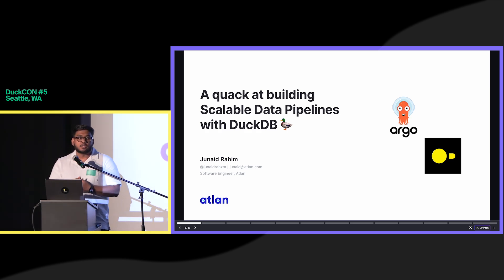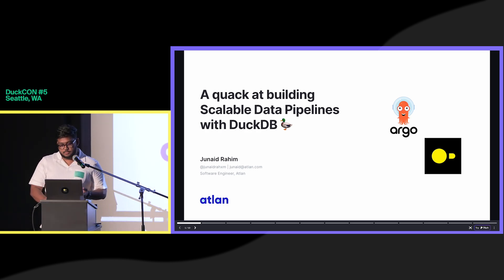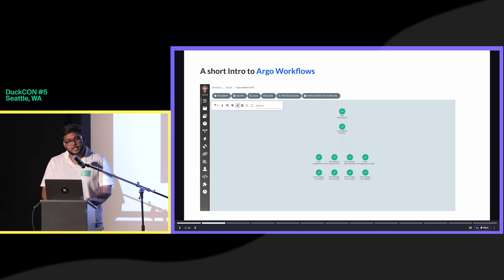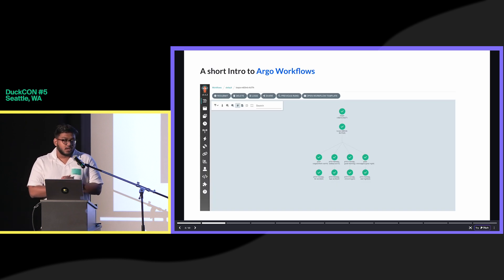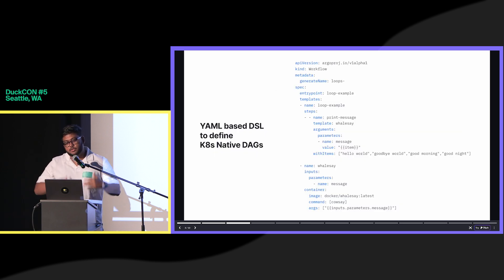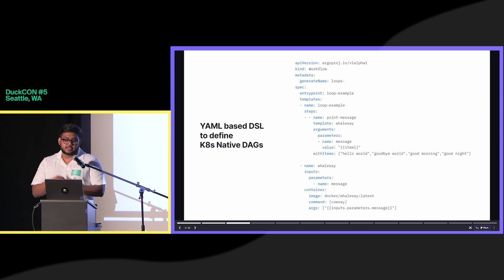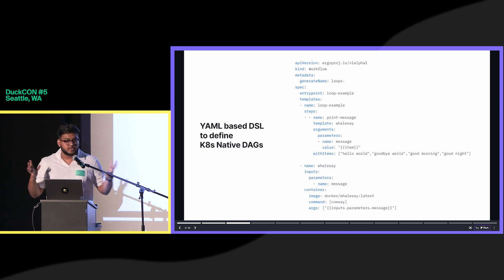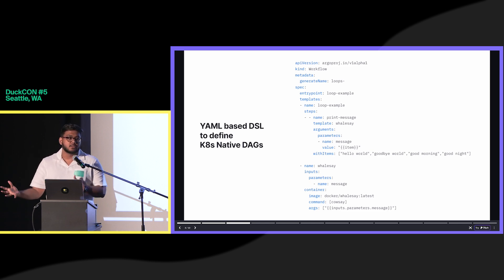The pipelines I'll be talking about are primarily Argo Workflows — these are Kubernetes native pipelines. Argo Workflows is a Kubernetes job orchestrator. You can define your workflows in a YAML-based DSL, and then the job orchestrator takes care of running each step as a pod. You can build a full DAG of these pods and run your pipelines that way, and Kubernetes takes care of making sure all the resources are allocated.